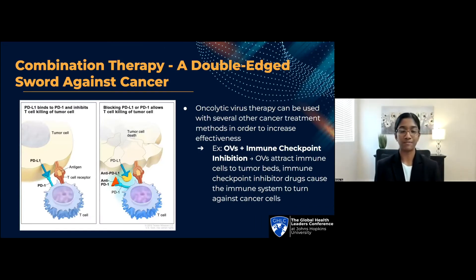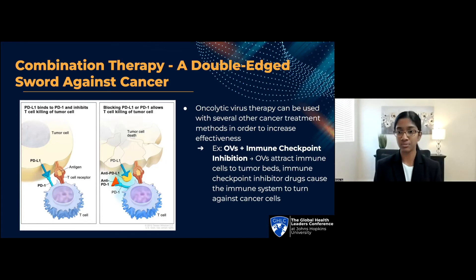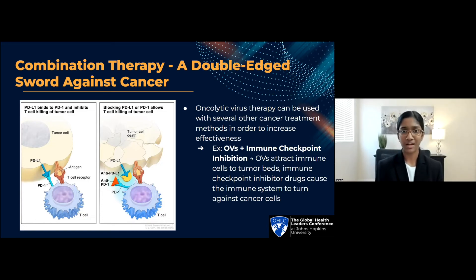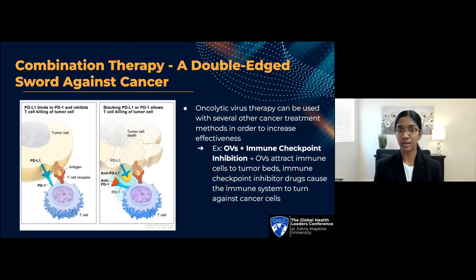Some of the most effective cancer treatment methods come from combination therapies. Oncolytic virus therapy could be used in combination with other treatments like chemotherapy, radiation therapy, and cancer immunotherapies in order to target a wider range of tumors with increased effectiveness. A common example is the use of oncolytic viruses with immune checkpoint inhibition. Oncolytic viruses notify the immune system that something is wrong and attract immune cells to the tumor microenvironment, and then checkpoint inhibitor drugs help inform immune cells that cancer cells are unhealthy, abnormal, and need to be eliminated.